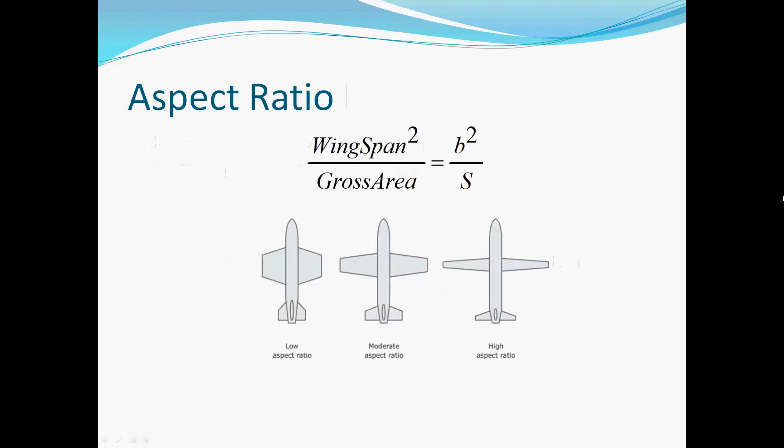Aspect Ratio is given as the ratio of the square of the wingspan to the gross area of the wing. This translates to the ratio of the wingspan to the mean chord length of the airfoil. Therefore, it is an indication of either the slenderness or lack thereof of a wing.